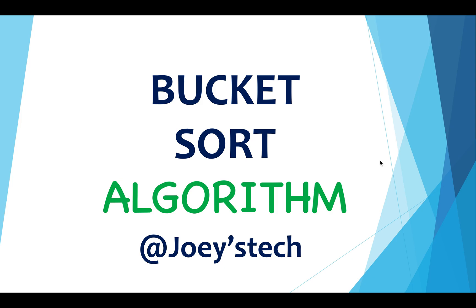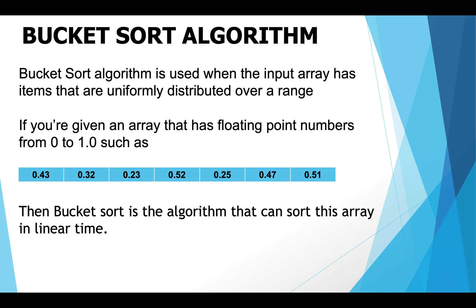Now let's jump on to understanding the bucket sort algorithm. The bucket sort algorithm is used when the given input array has items that are uniformly distributed over a range. For example, if you are given an array that has floating point numbers ranging from 0 to 1, then bucket sort is one sorting candidate that can sort this array in linear time.